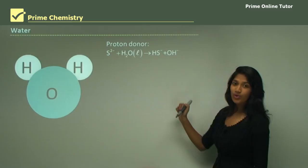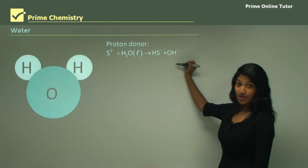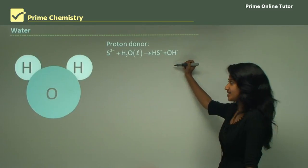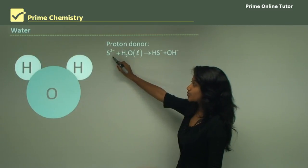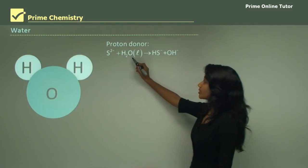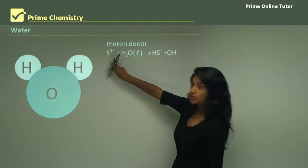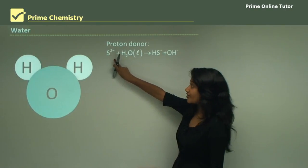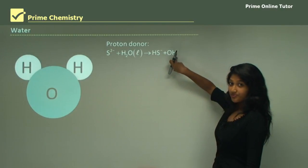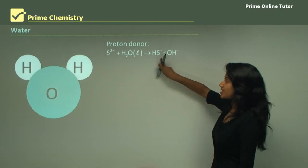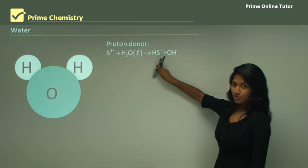Looking at water first, we have it acting as a proton donor — in other words, acting as an acid. Here we have it reacting with sulfide. When it reacts with sulfide, it's going to donate a proton, meaning a hydrogen ion, and form a hydroxide ion. And there's going to be a hydrogen sulfide anion being formed.